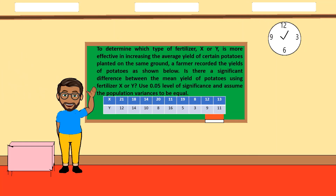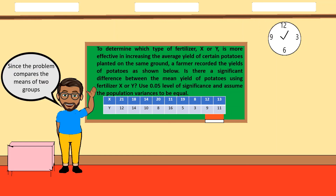Example 4: To determine which fertilizer, X or Y, is more effective in increasing the average yield of potatoes planted on the same ground, a farmer recorded the yields. Is there a significant difference between the mean yields using fertilizer X or Y? Use a 0.05 level of significance and assume population variances to be equal. Since n is less than 30, the test statistic is the T-test for two-sample case.